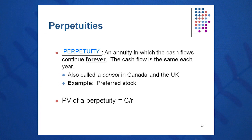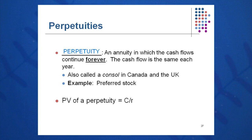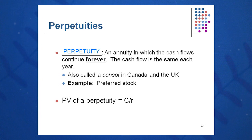The term 1 minus 1 over (1 plus R) to the T, with T being a very large number, kind of goes away — it goes toward 1. It basically reduces to 1 minus 0. So it's C times 1 over R in the present value annuity formula. Perpetuity is very simply C over R. Never forget this — if someone asks you what's the present value of a perpetuity in an interview, very simply: C over R.